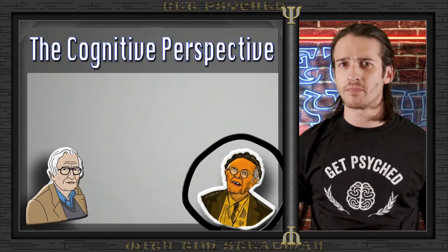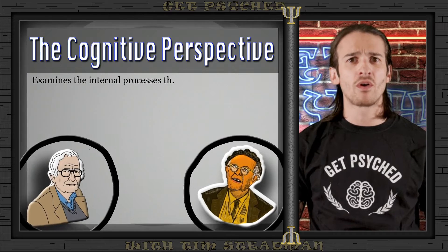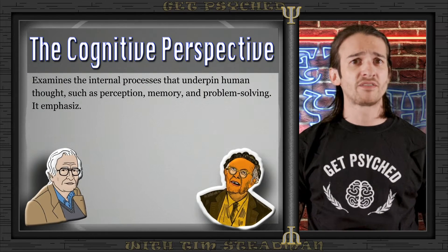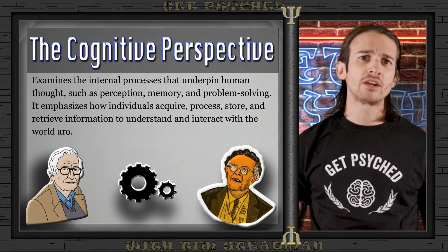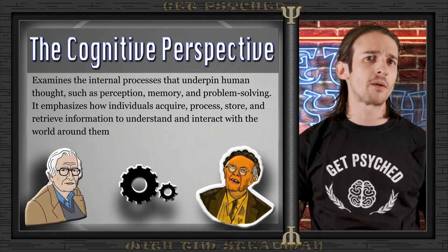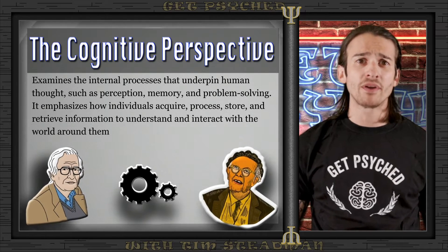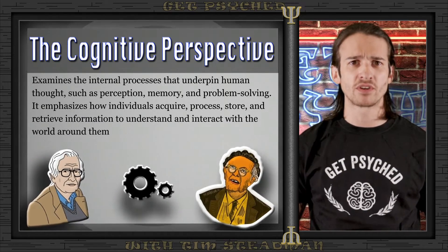The cognitive perspective developed as a reaction to behaviorism in the mid-20th century, influenced by psychologists such as Jean Piaget and Noam Chomsky. It focuses on the mental processes that direct human behavior. Cognitive psychologists view behavior as influenced by internal processes including thoughts, perceptions, memory, and problem-solving, explaining how individuals process information and how this leads to diverse behavioral responses.